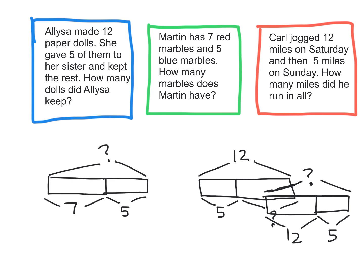This model, do we know what the total is? No. Do we know what the parts are? Yeah, it's seven and five. So we might look at this and say, well, Alyssa made 12 paper dolls, she gave five of them to her sister, and kept the rest. The first problem is, we don't have a 12 in here, do we?